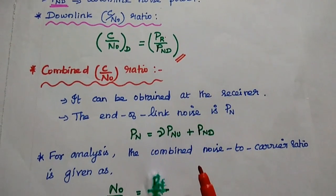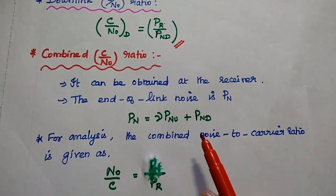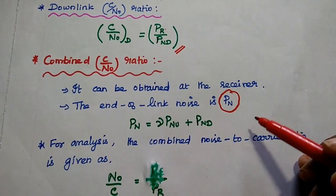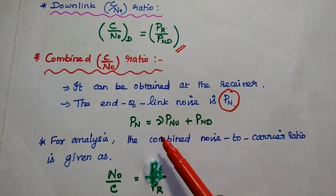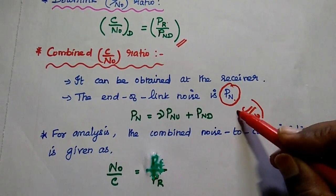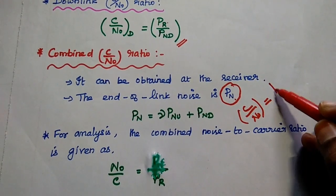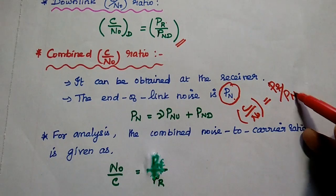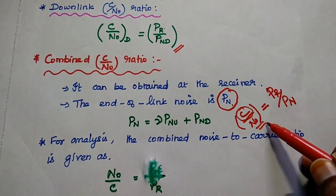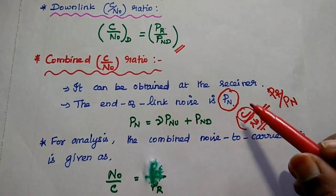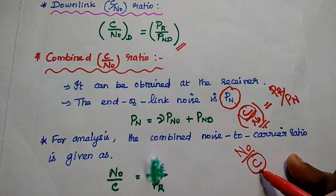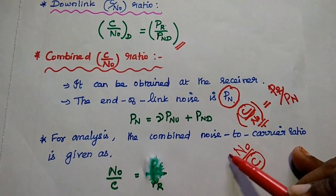Next, we are going to find out the combined C/N ratio. Combined means we include the overall noise at the receiver side. The overall noise at the end of the link equals gamma × PNU plus PND. For convenience, we take the reciprocal of the carrier to noise ratio, because the carrier power is common and almost equal for uplink and downlink, and only the noise values vary. If we keep the common value in the denominator, we can simply add the numerators.